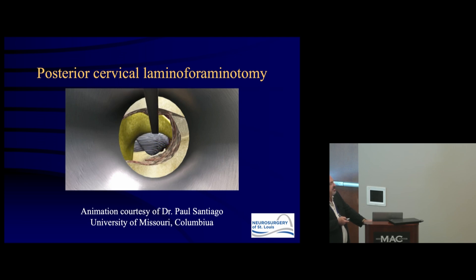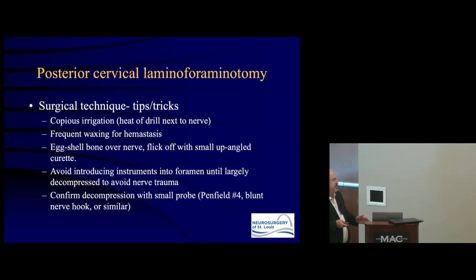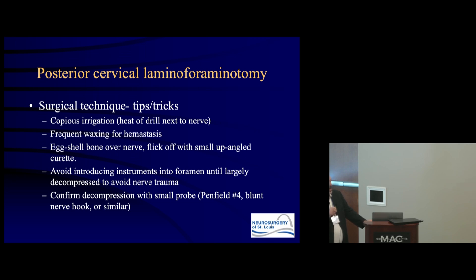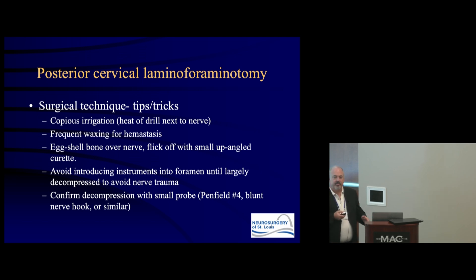Tips and tricks: use copious irrigation throughout — the diamond burr and any drill generate a lot of heat right next to the nerve, so keep it cooled. This area bleeds quite a bit, so periodically apply bone wax to your edges to dry it up. I typically eggshell the superior facet over the nerve — try not to go completely through the cortical shell with the drill — then come under it with a small up-angled curette and flick off the last piece of bone. Don't introduce instruments into the foramen until decompression is fairly complete, to avoid nerve trauma.